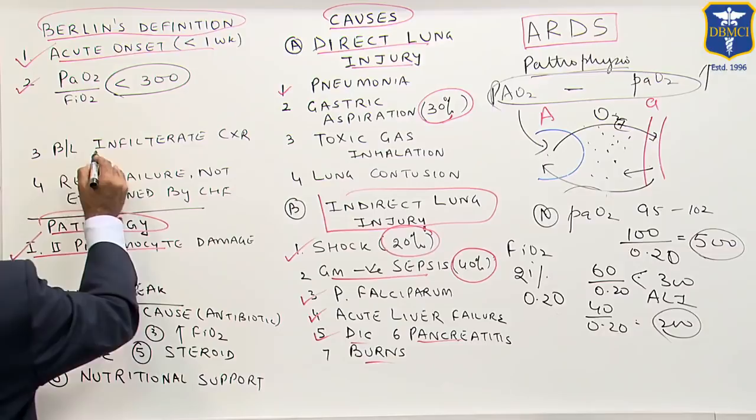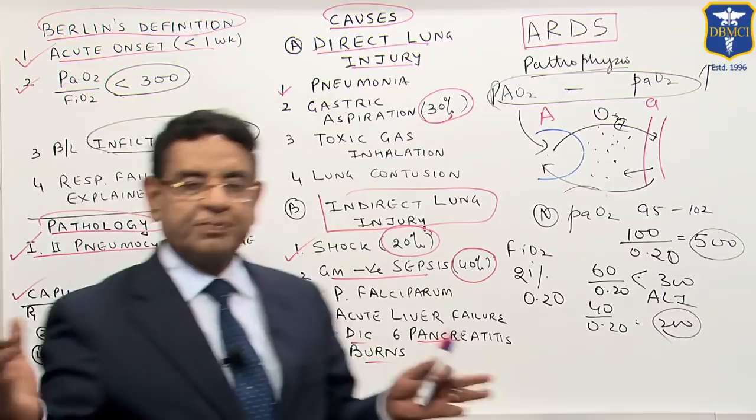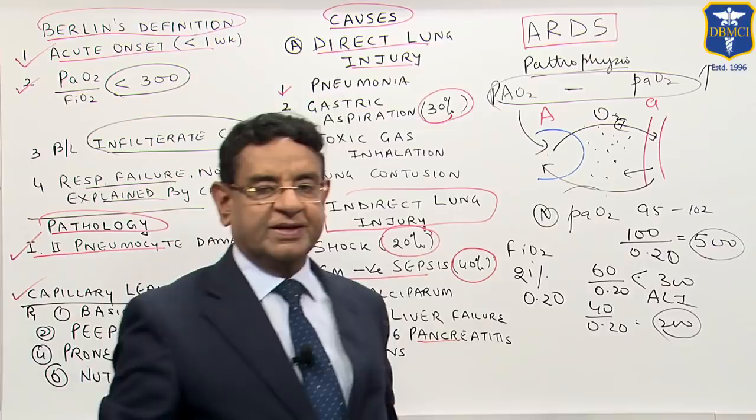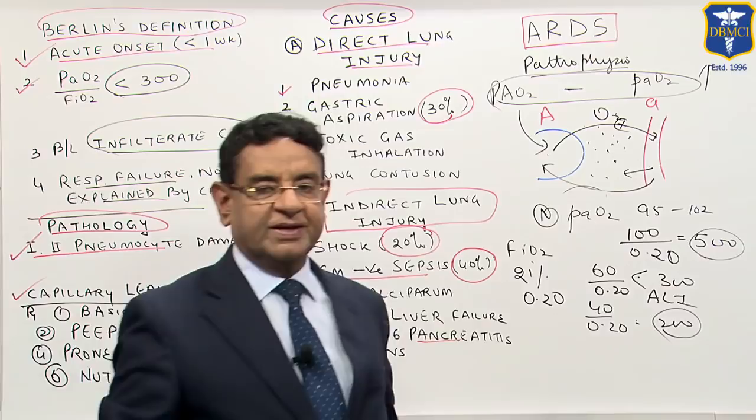On chest X-ray you get bilateral infiltrates — diffuse opacities are seen. The fourth criterion is respiratory failure not explained by congestive heart failure. These are the criteria by which we diagnose a case of ARDS.